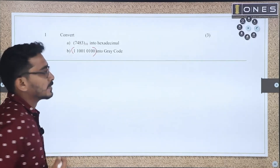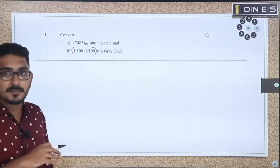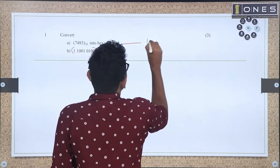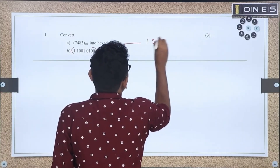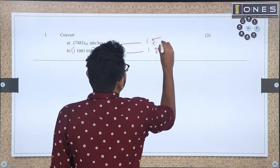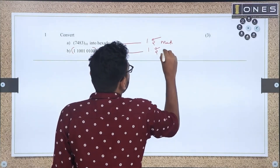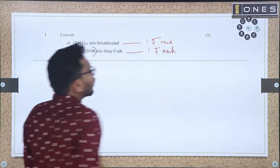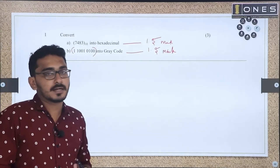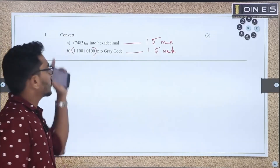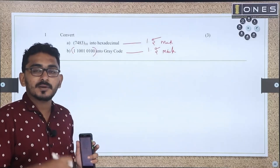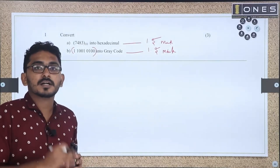Now let's look at the answer scheme. The first question is 1.5 marks, and the second question is also 1.5 marks — the mark is split up. The solution is straightforward.